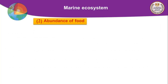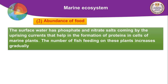The second non-living factor is the abundance of food or excess nutrients. The excess nutrients we refer to are nitrates and phosphates. Surface water has phosphate and nitrate salts brought by upwelling currents, which help in the formation of proteins in cells of marine plants.